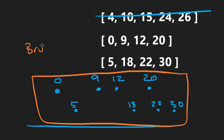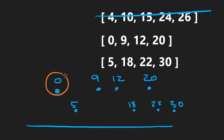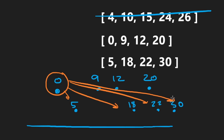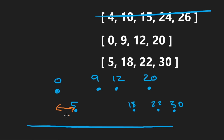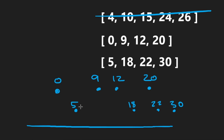A brute force way would be to consider every single range. Take an element, consider every other element from the second list, and find the smallest one. For zero, the closest element in the second list is five, giving a range length of five. For nine, the closest is five, giving a range length of four. And we just keep going.